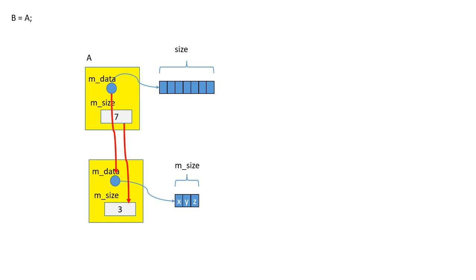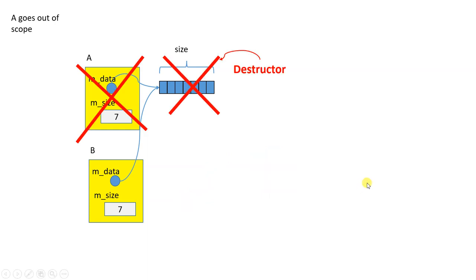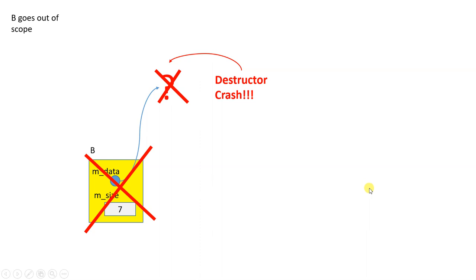When everything is over and the program wants to destroy objects: the first destructor destroys the memory, and the second destructor tries to destroy the same memory and crashes. That's when it dies. That's bad assignment — we do not want bad assignment. Whenever you have classes with resources outside their scope, you need to handle assignment and copying. In OOP244, we have the Rule of Three.